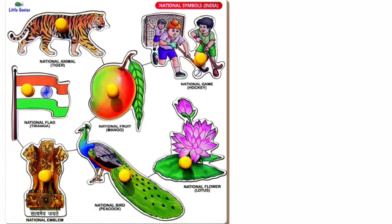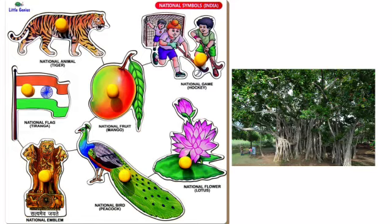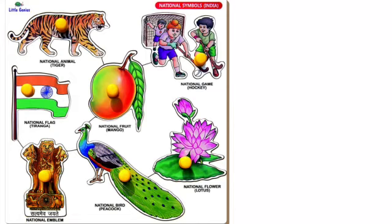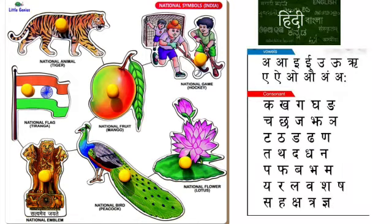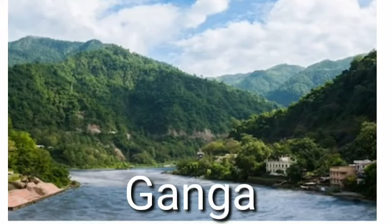Other national symbols: Royal Bengal Tiger is our national animal. Indian Peacock is our national bird. Lotus is our national flower. Indian Banyan is our national tree. Mango is our national fruit. Hockey is our national sport. Hindi in Devanagari script is our national language. Our national river is the Ganga.